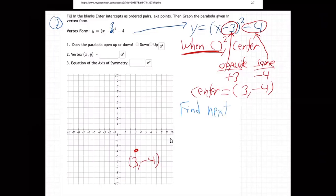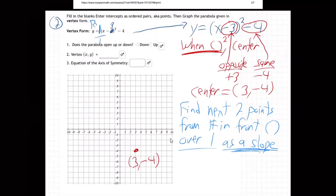Find the next two points to make the u-shape from the number in front of the parentheses over one as a slope. You take the number from, well there's no number in front so that's really a one, and put it over one. So that's your rise and that's your run.